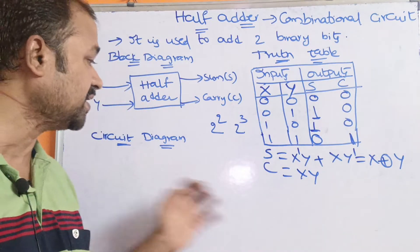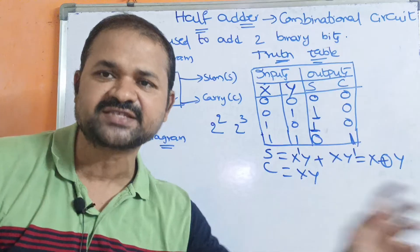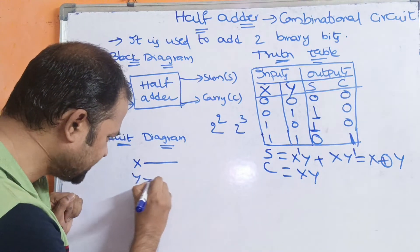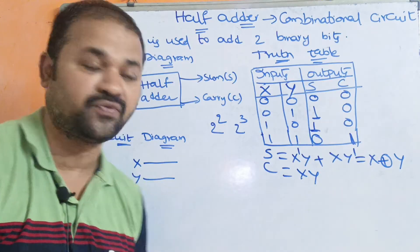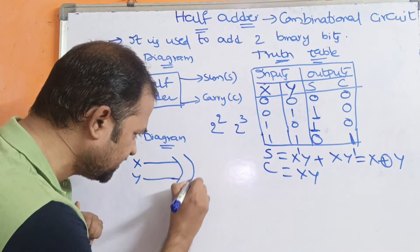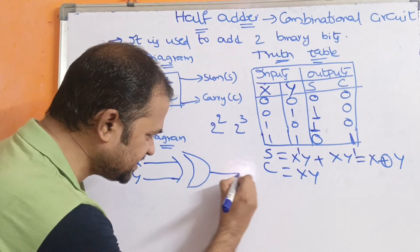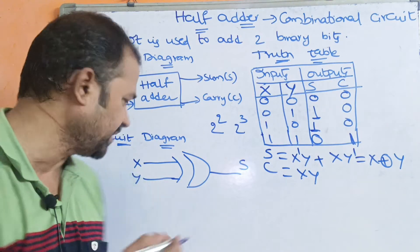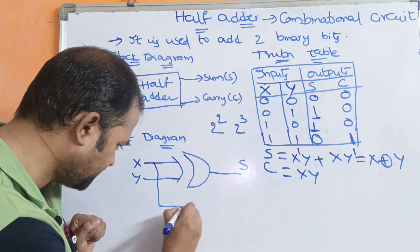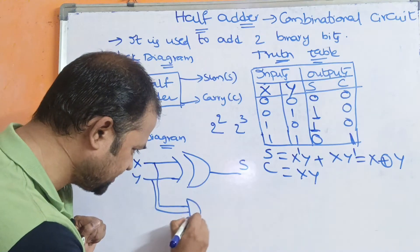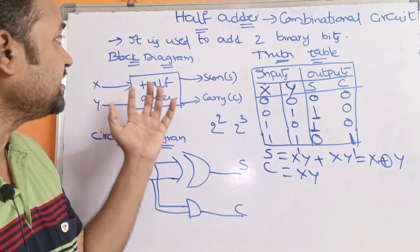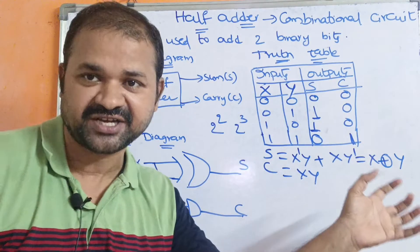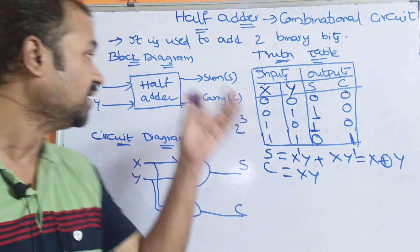Now we draw the circuit diagram for the half adder based on the sum and carry expressions. There are two inputs, x and y. For sum, we use an XOR gate with x and y as inputs, giving the sum output. For carry, we use an AND gate with x and y as inputs, giving the carry output. So the half adder requires a block diagram, truth table, expressions for sum and carry, and a circuit diagram.